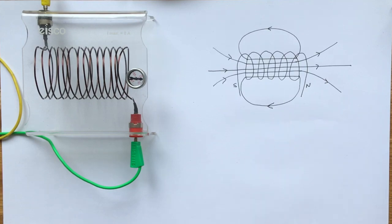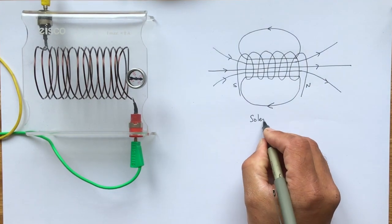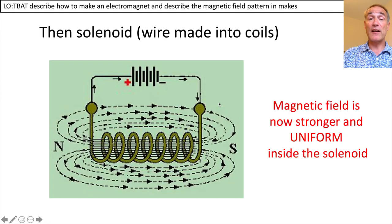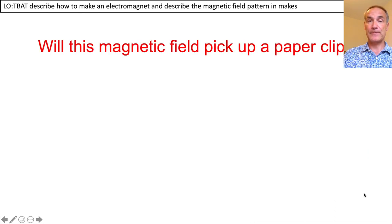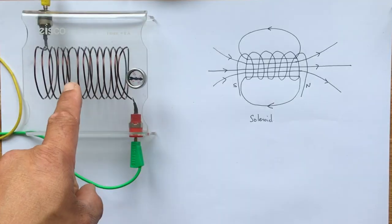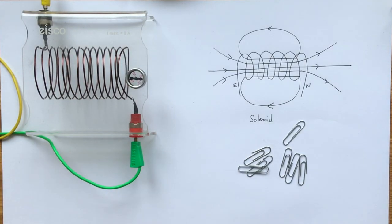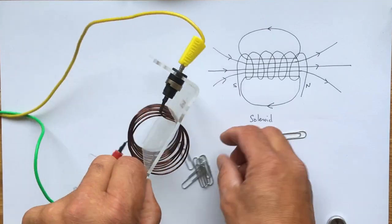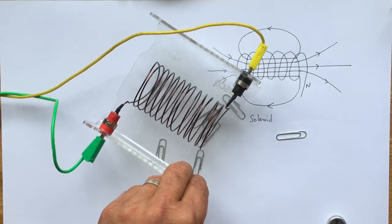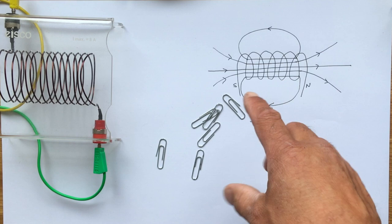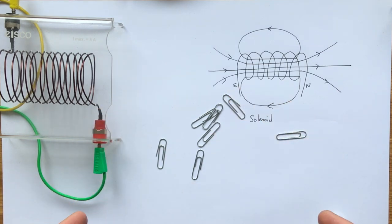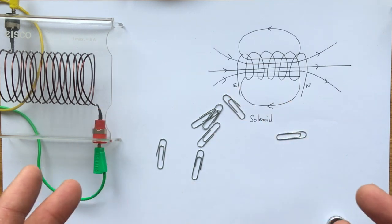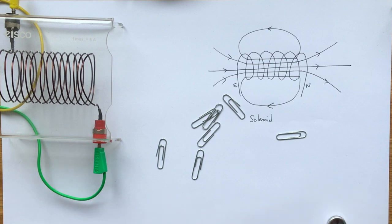The magnetic field of a solenoid comes out of the north, into the south, and is uniform in the centre. But even a solenoid is still not strong enough to pick up paper clips — it is not yet an electromagnet capable of attracting magnetic materials.